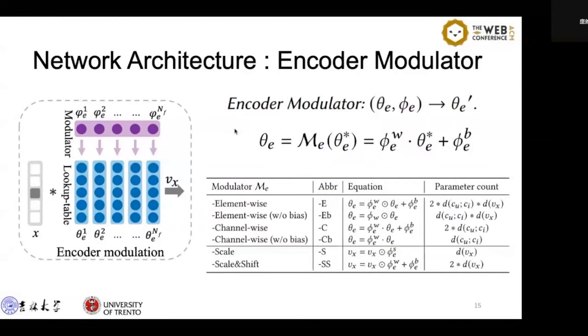We define other encoder modulation functions to further demonstrate the integrity of the overall method, such as element-wise addition and scaling operations. We will compare the performance of these methods in ablation experiments.